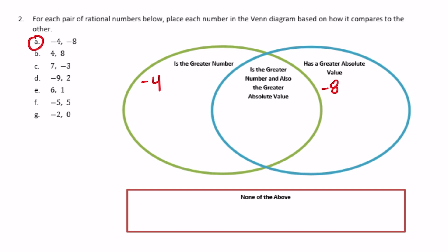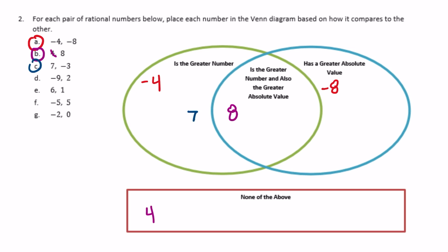So negative 8 is the one that has a greater absolute value, so I'm going to put that in the center, and then we didn't use the number negative 4, so I'm going to put it down here because it's none of the above. Part C: 7 and negative 3 — which is the greater number? 7. Which has the greater absolute value? The absolute value of 7 is 7, the absolute value of negative 3 is 3, so 7 has the greater absolute value, so it goes in the center. We did not use negative 3.